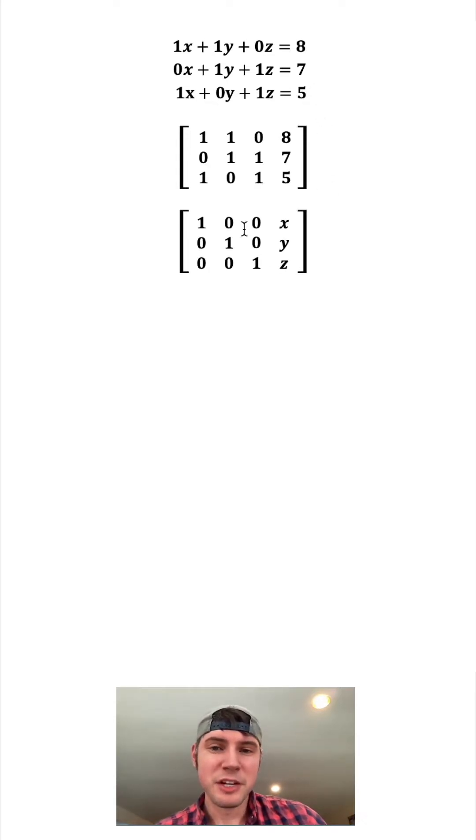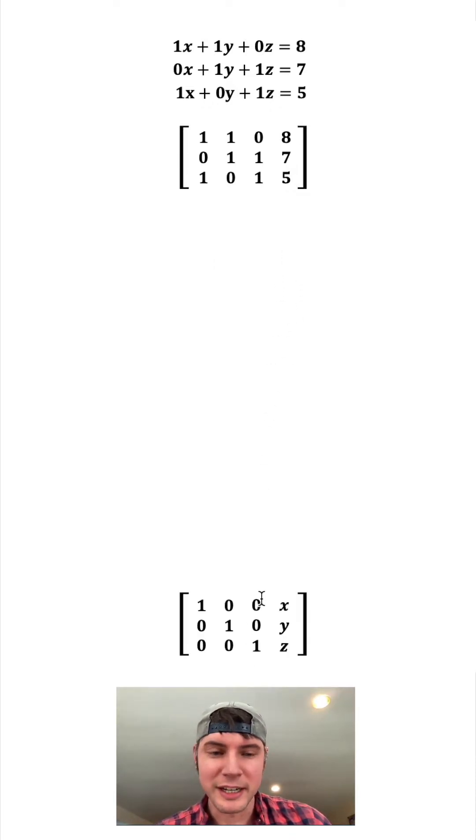Now my goal is to get a matrix that has ones on the diagonal right here and zeros everywhere else. When I have this, that means that whatever numbers are here are my solutions for x, y, and z. So we'll drag this down here, and this is where we're trying to get to.